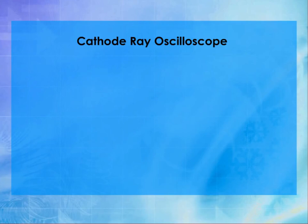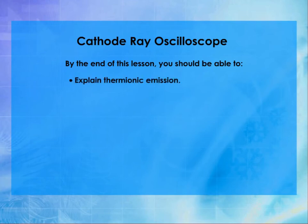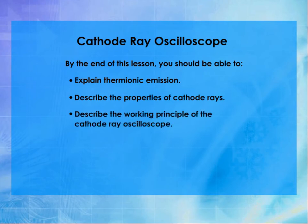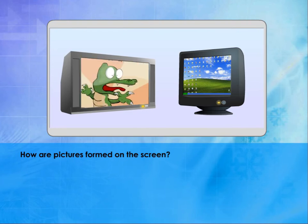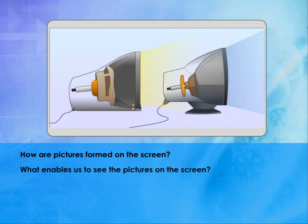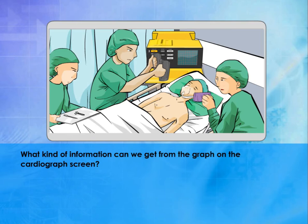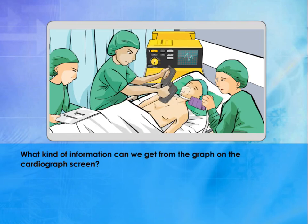Cathode ray oscilloscope. By the end of this lesson, you should be able to: explain thermionic emission, describe the properties of cathode rays, and describe the working principle of a cathode ray oscilloscope. How are pictures formed on the screen? What enables us to see the pictures on the screen? What kind of information can we get from the graph on the cardiograph screen?